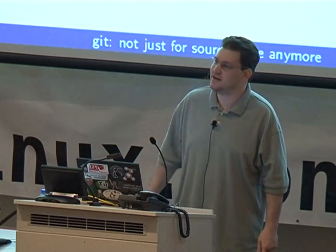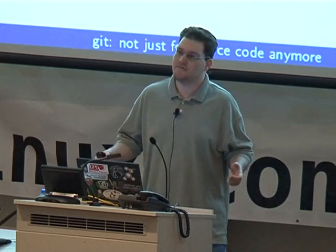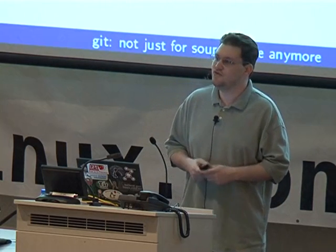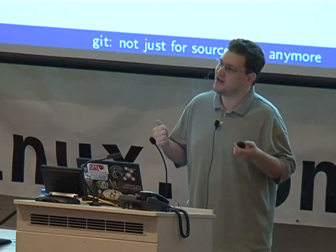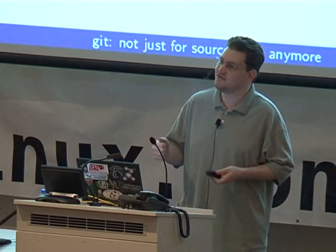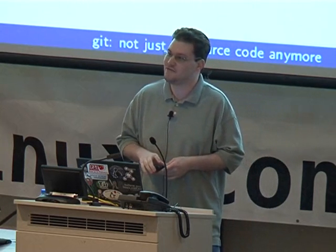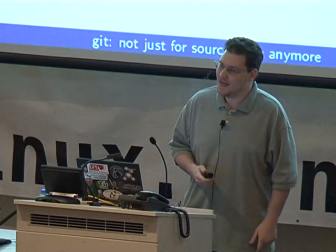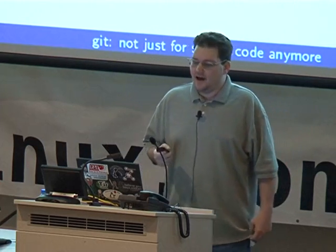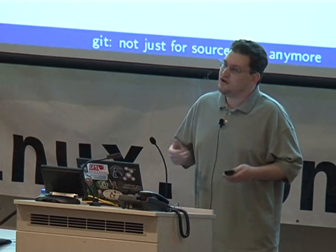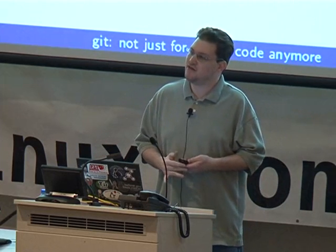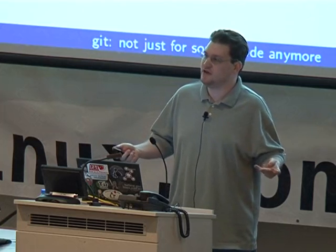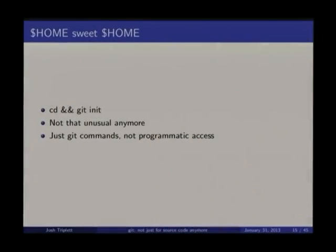One of the most common things people mention when they say they're using Git for something unusual is putting their home directory in Git. This is really awesome — I highly recommend it. But it isn't that unusual anymore; a lot of people are doing it. You can search for it on GitHub. A friend pointed out that now that GitHub has file name search, it's fun to search for things like .ssh/id_rsa and see how many people forgot to exclude that.